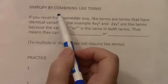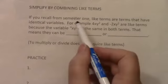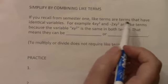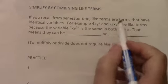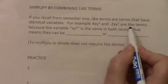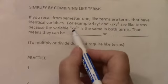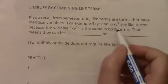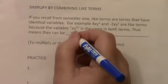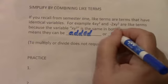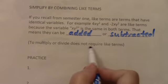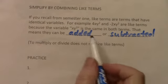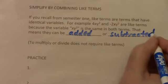So let's take a look at a few examples. We're going to simplify by combining like terms. If you recall from semester 1, like terms are terms that have identical variables. For example, 4xy squared and negative 2xy squared are like terms because the variable xy squared is the same in both terms. That means they can be added or subtracted. To multiply or divide does not require like terms, but to add or subtract, we do. That's a funny looking d.